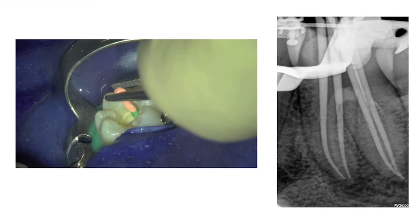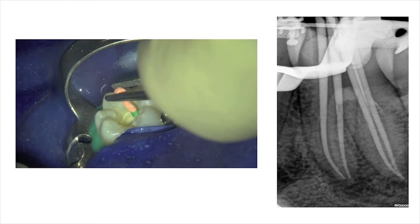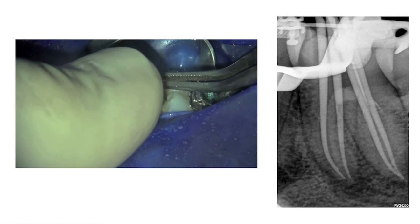After root canal preparation, four size medium Wave One Gold gutta-percha points were fitted into the prepared root canals and the fit of the cones was verified radiographically.